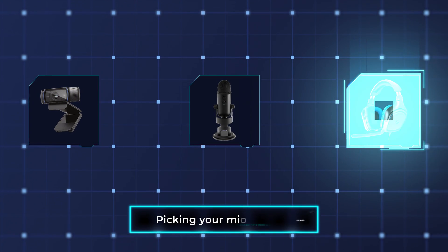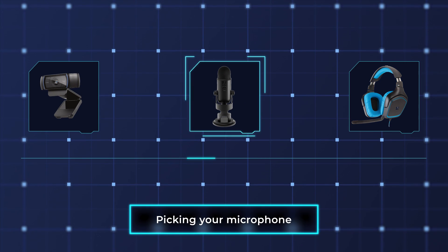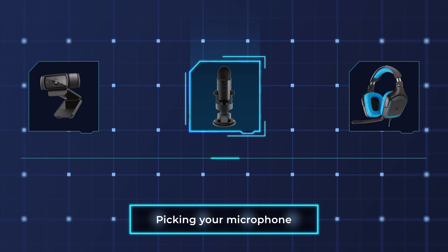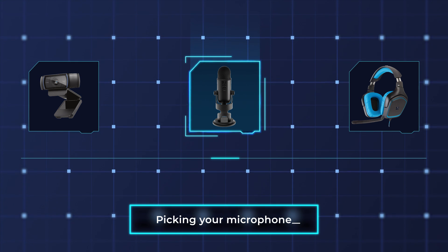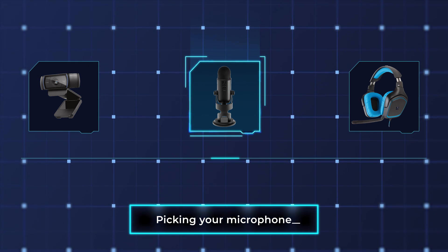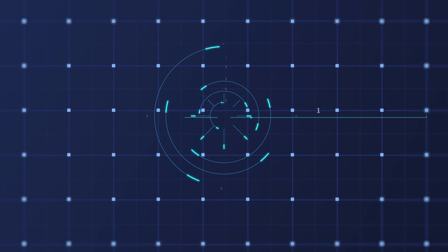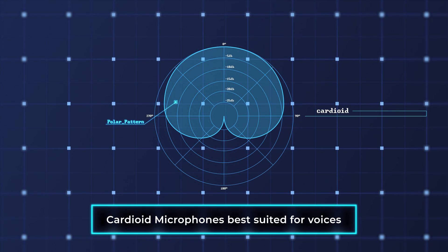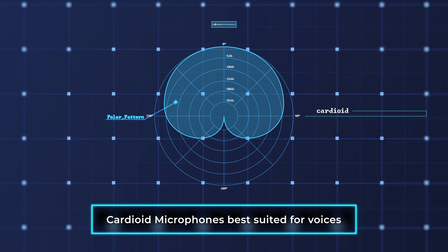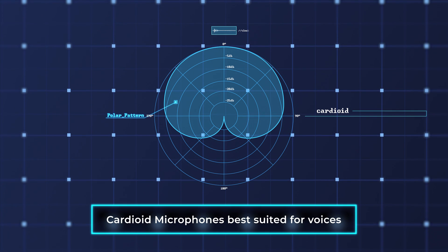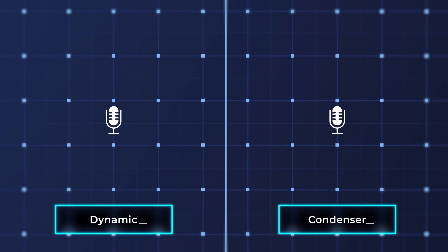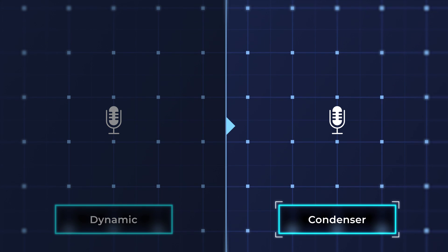The first and most important choice you have to make is what you will use as your microphone. If you're on a budget, you'll have to use whatever microphone is available, be it microphones built into your PC, gaming headsets, or a webcam. If you have a budget, we recommend purchasing a Cardioid microphone. Cardioid microphones have a polar pattern that's best suited to picking up your voice, and can either be condenser or dynamic microphones.